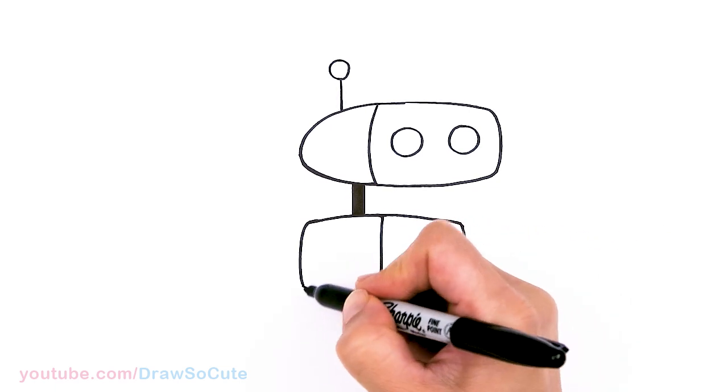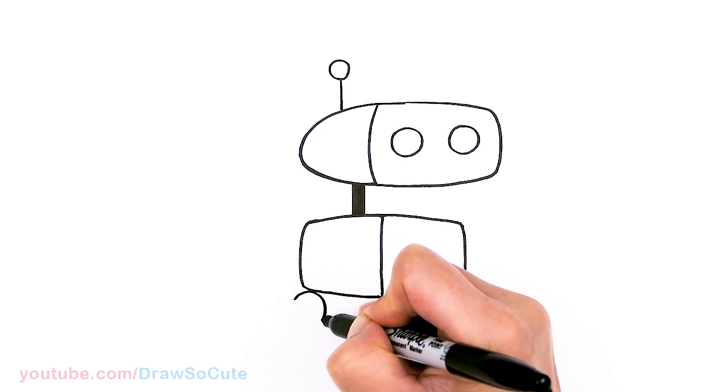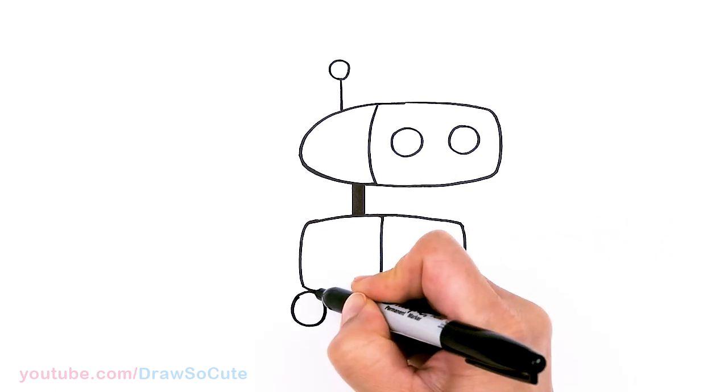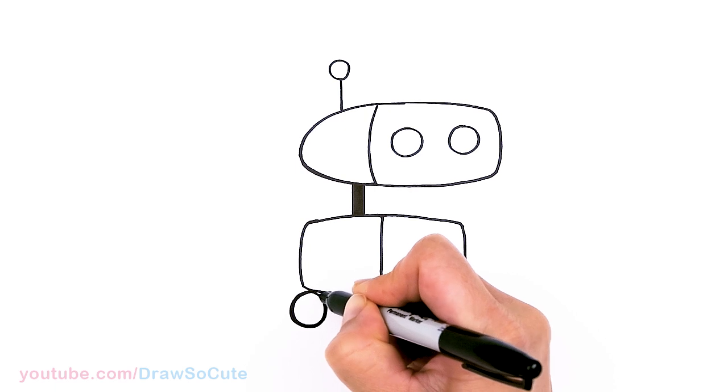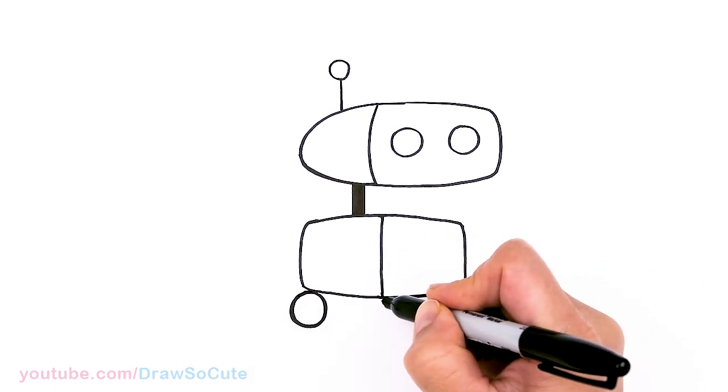Okay, so then now the wheels right underneath, we're going to draw a circle.